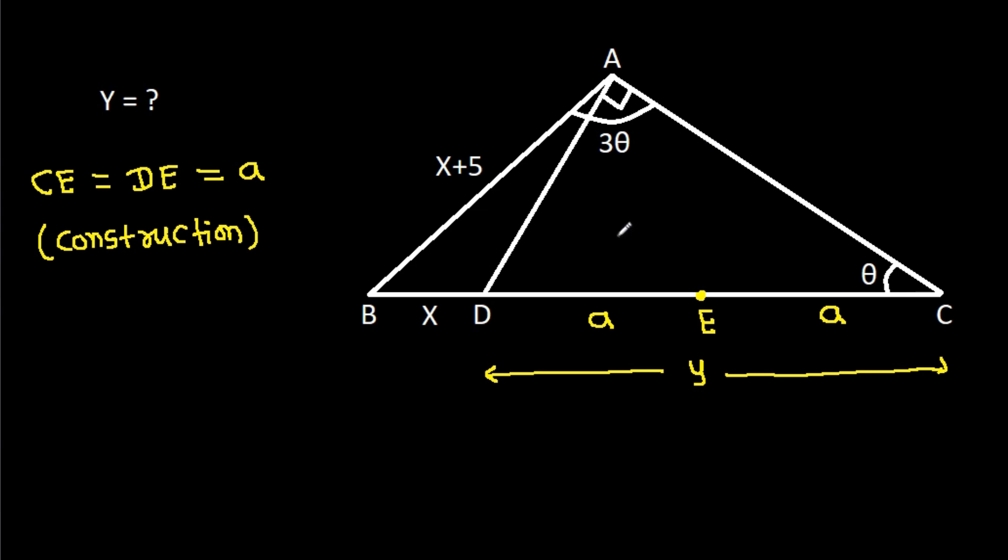Now, in triangle ACD, this angle is 90 degrees. If we make a circle around ACD, then in any circle, the diameter makes an angle of 90 degrees on the circle.